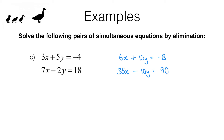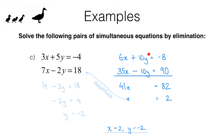Pause the video and see if you can complete this problem. Adding the two equations together gives 41x equals 82, so dividing by 41 gives x equals 2. Substituting into the second equation: 7x is 14, so 14 minus 2y equals 18. Subtracting 14 from both sides gives negative 2y equals 4, and dividing by negative 2 gives y equals negative 2. My solution is x equals 2, y equals negative 2.